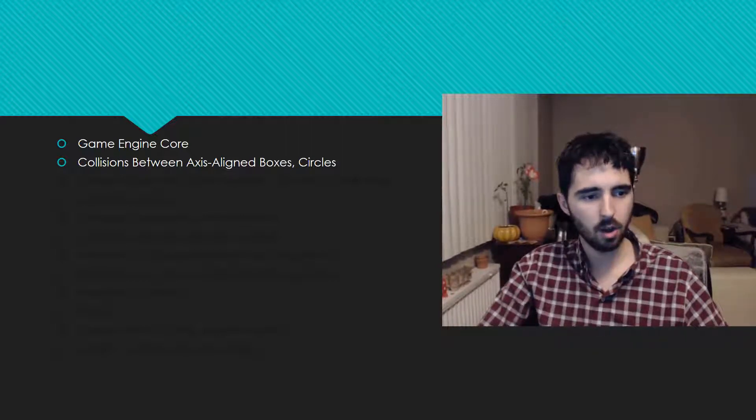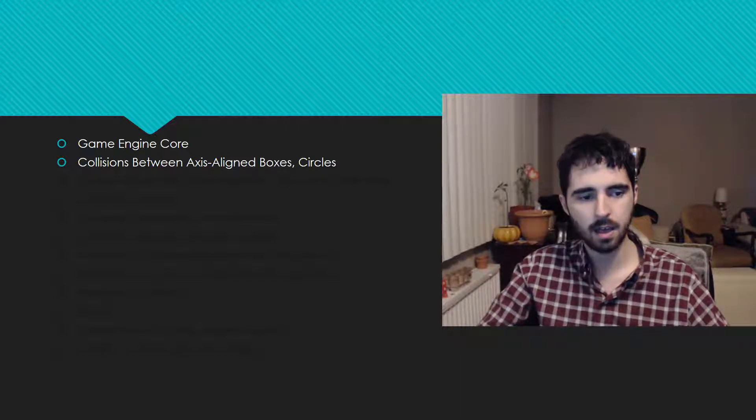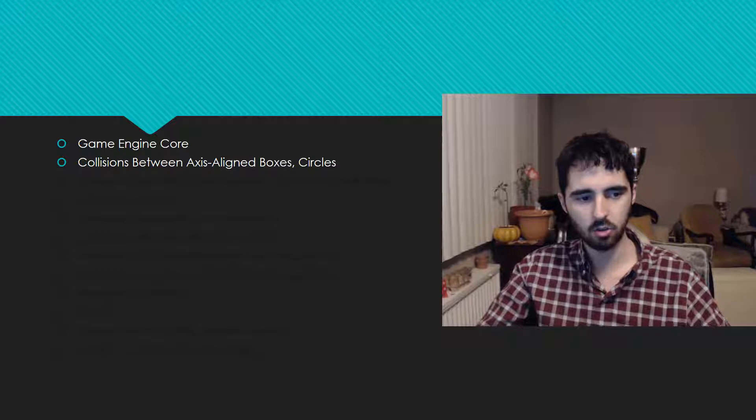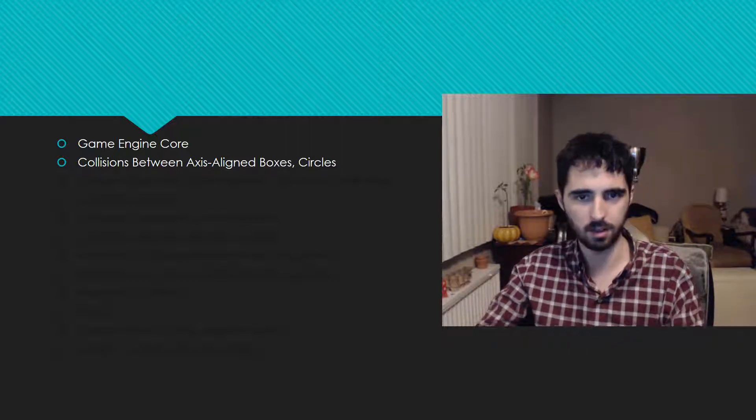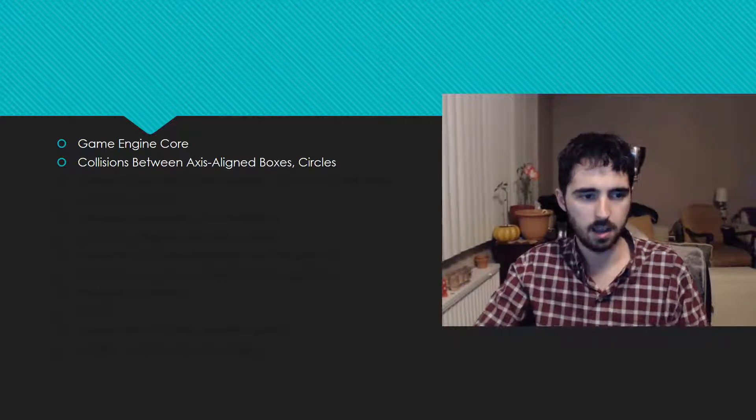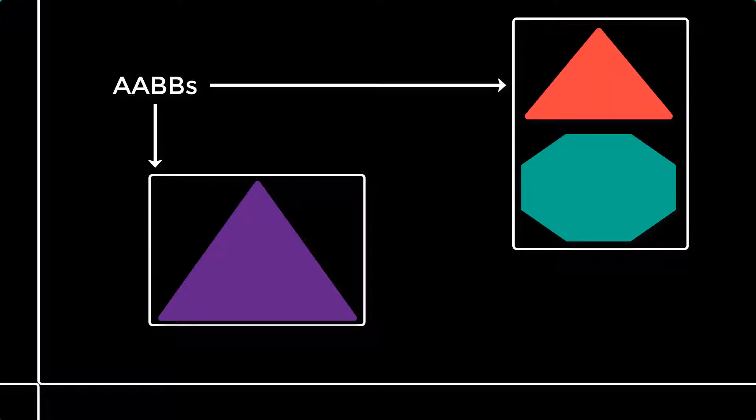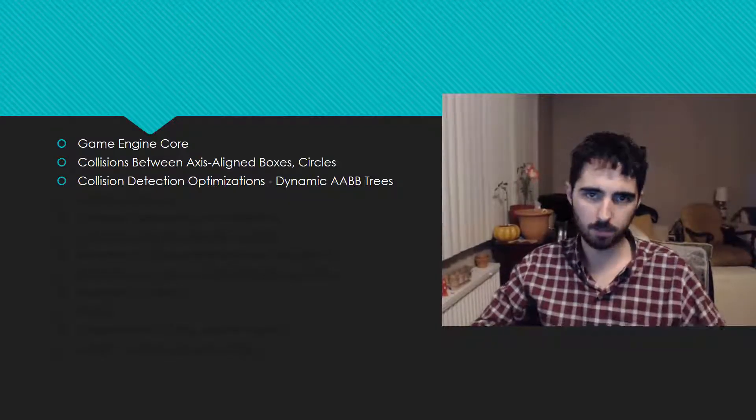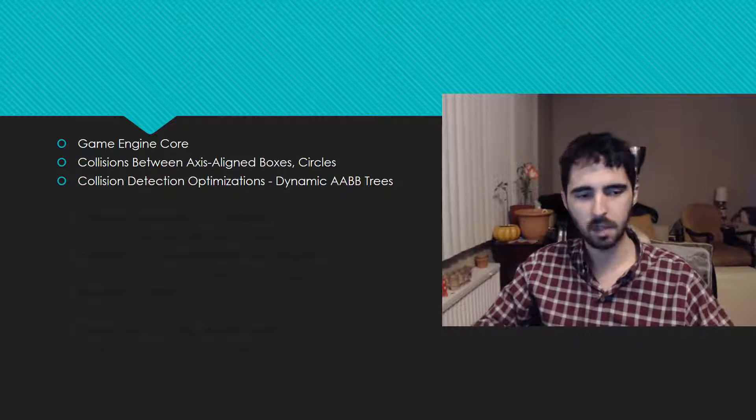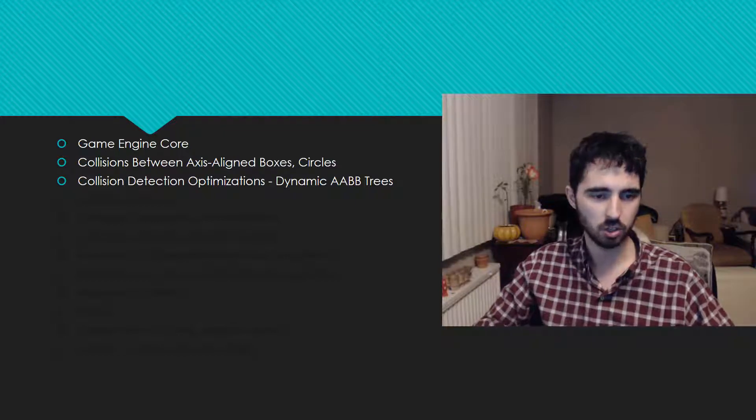Then I'm going to talk about how to detect collisions between axis-aligned bounding boxes and how to detect collisions between circles. An axis-aligned bounding box is just a box which is aligned with the axis that completely encompasses a polygon or group of polygons. Then I'll dive right into some of the optimizations you do with collision detection. Specifically, I'm going to be talking about dynamic axis-aligned bounding box trees, which I'll just call DAB trees.